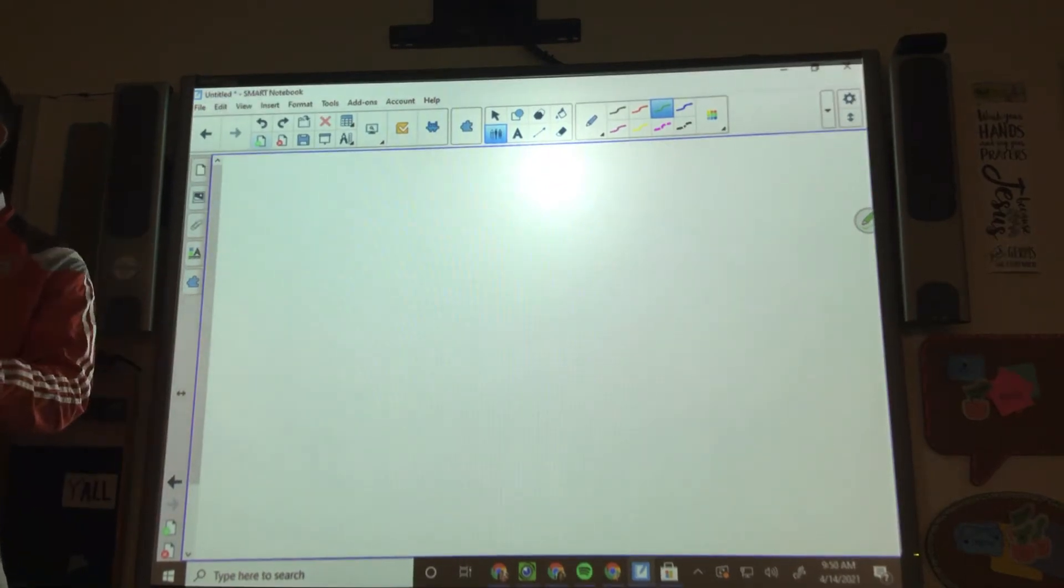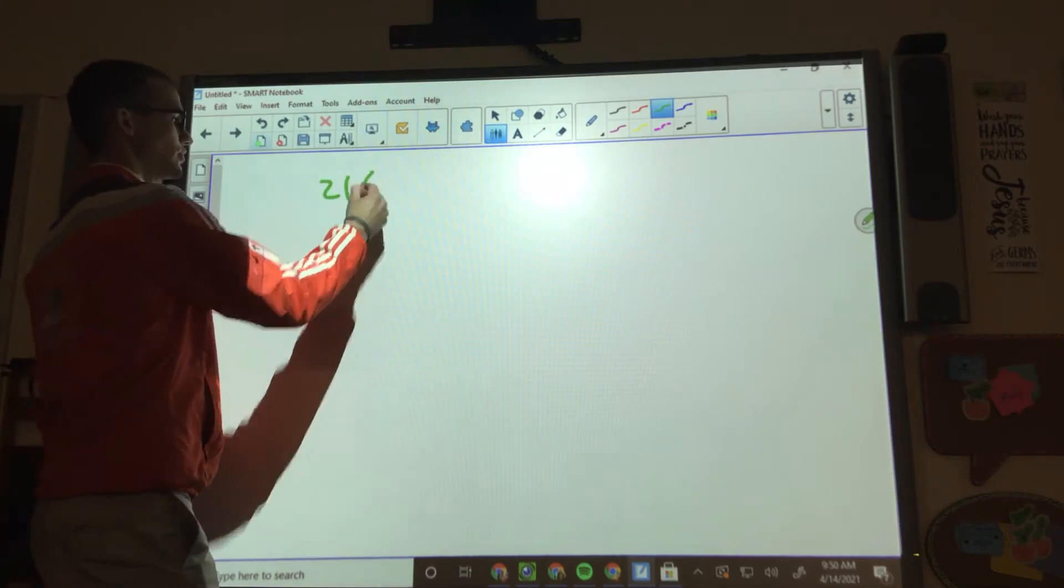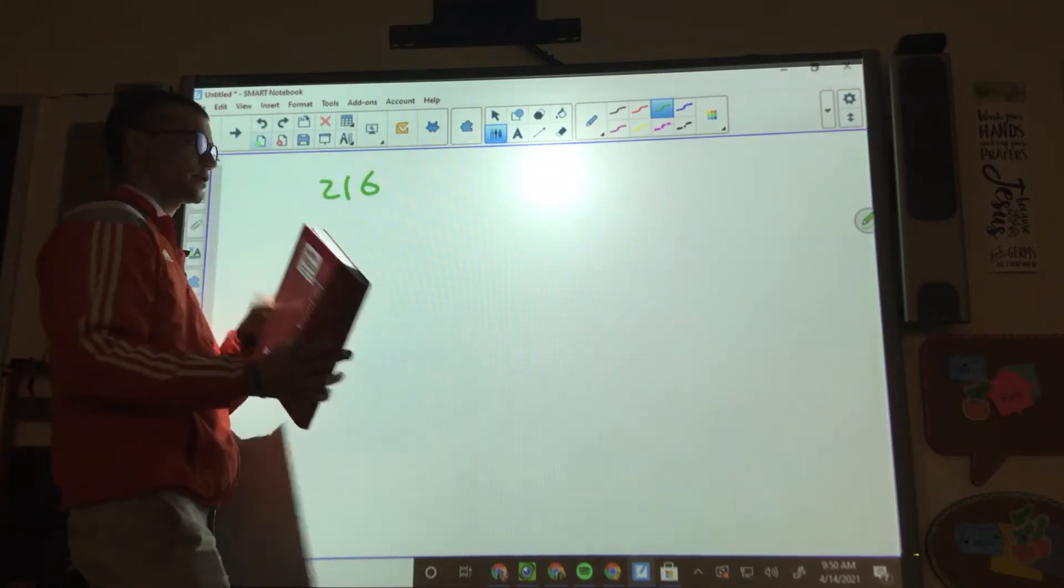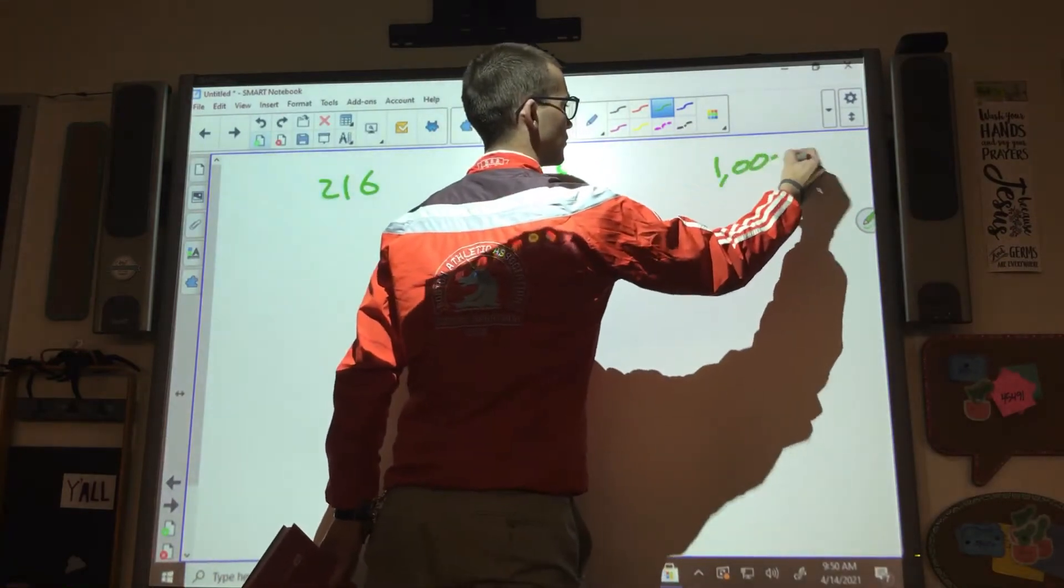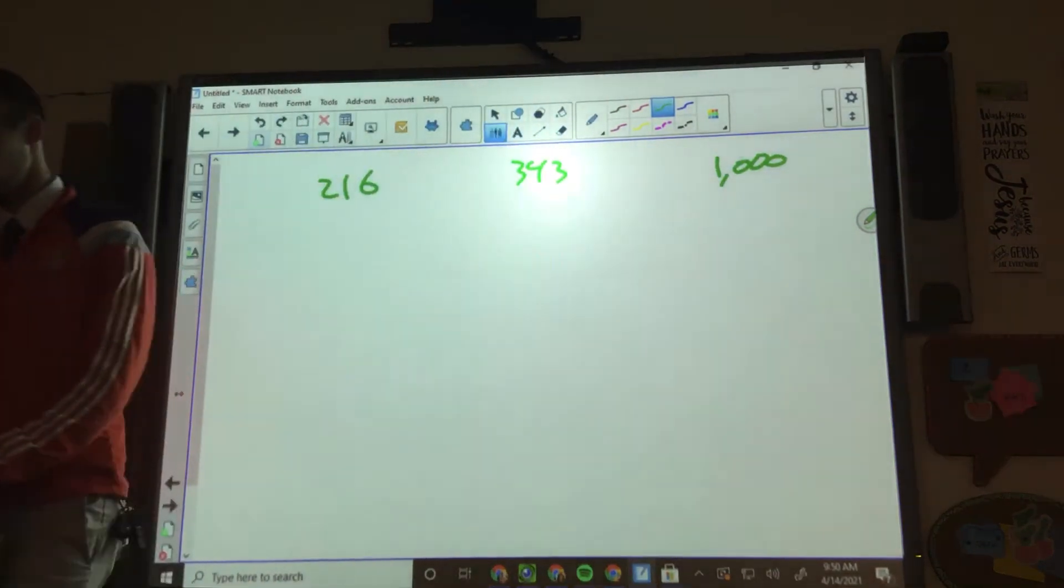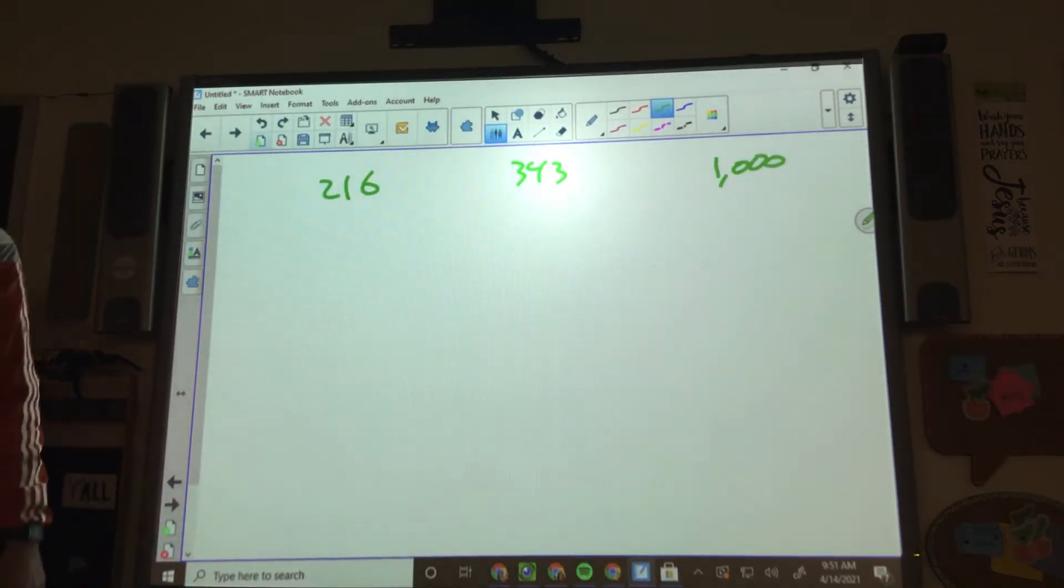All right. Guided practice. Do the same thing where you guys are breaking them down. We're doing 216, 343, and 1,000. Go. Give you guys three minutes. See how far you can get in three minutes.